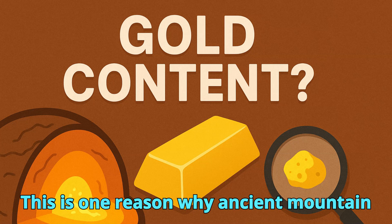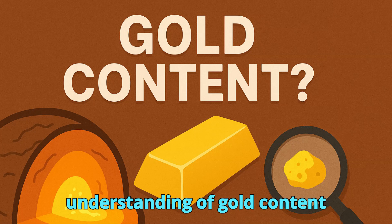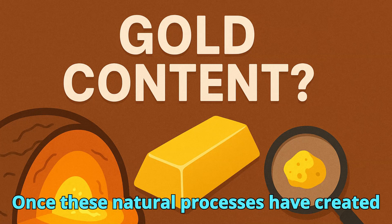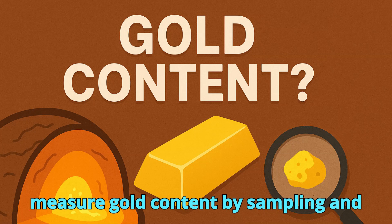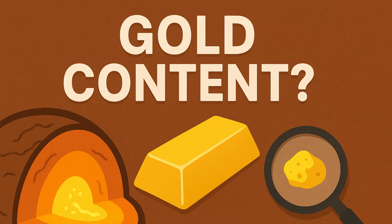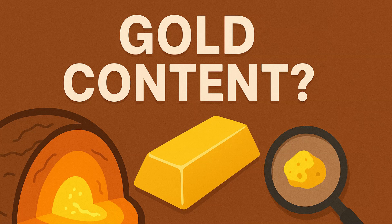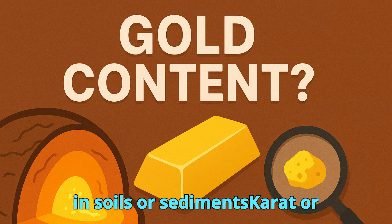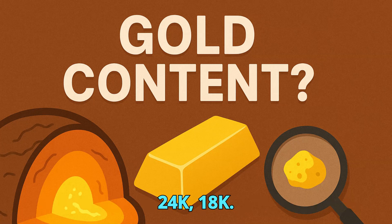This is one reason why ancient mountain belts often host significant gold deposits. Once these natural processes have created a concentration of gold, geologists measure gold content by sampling and analyzing rocks or sediments. This is usually expressed as grams per ton (g/t) in ores, parts per million (ppm) in soils or sediments, or carat/fineness in refined gold products (e.g., 24k, 18k).